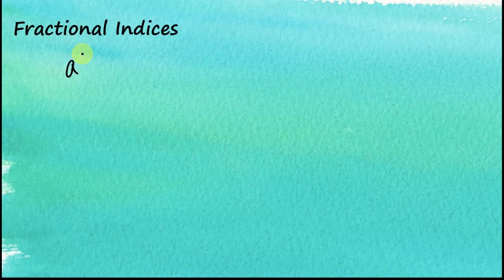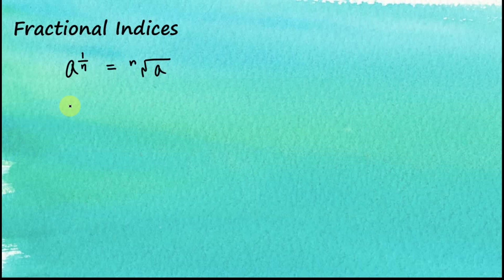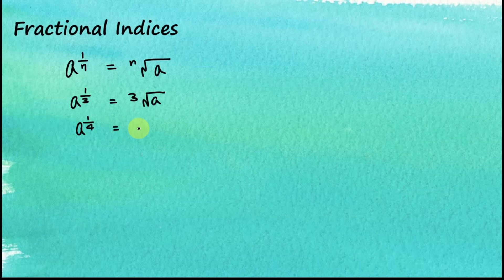a to the power of 1 over n is equal to the nth root of a. For example, a to the power of 1 over 3 is equal to the cube root of a, and a to the power of 1 over 4 is equal to the fourth root of a.